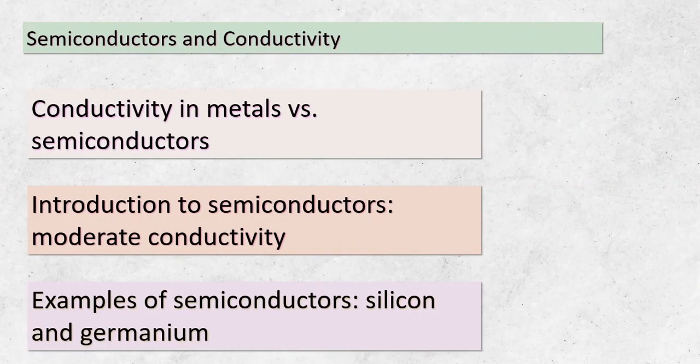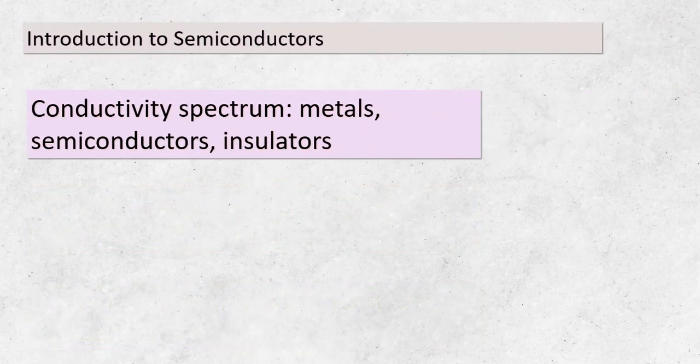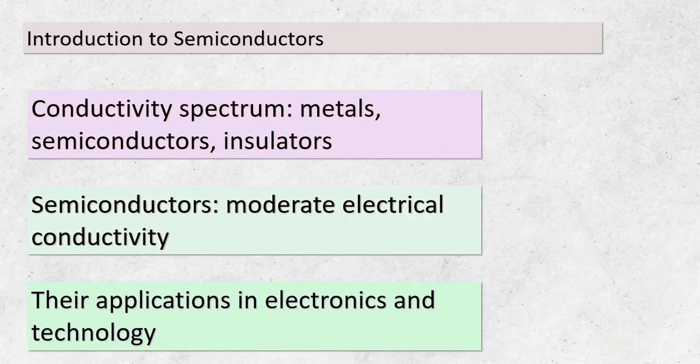Today, we're delving into the intriguing world of semiconductors and their unique properties. We already know that metals are excellent conductors of electricity, but semiconductors exhibit a different level of conductivity — falling between metals and insulators. What makes semiconductors special is that their moderate conductivity paves the way for their extensive use in various electronics and technologies. From computers to solar cells, semiconductors play a vital role in shaping our modern world.